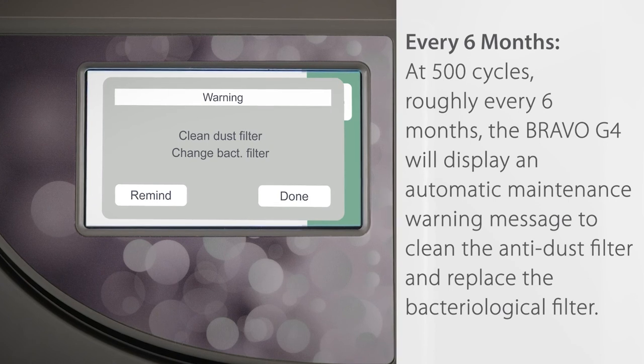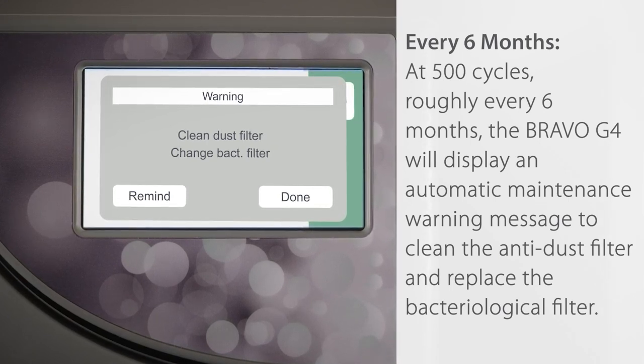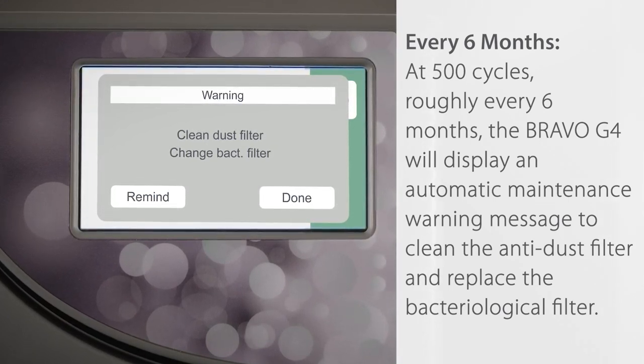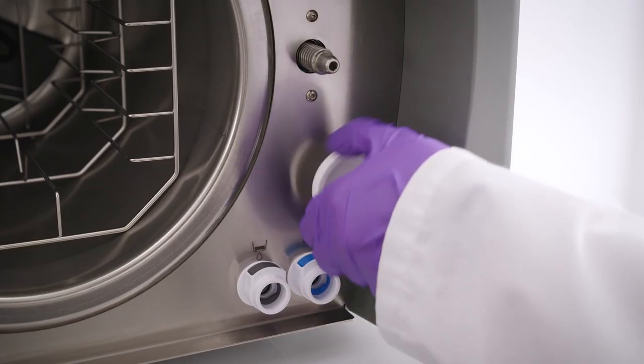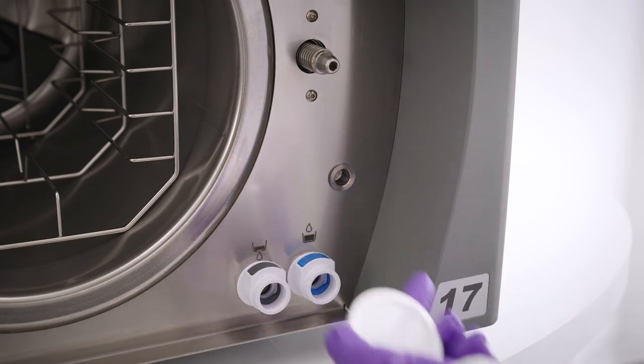Every six months. At 500 cycles, roughly every six months, the Bravo G4 will display an automatic maintenance warning message to clean the anti-dust filter and replace the bacteriological filter.